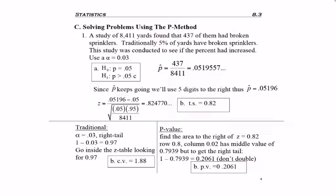The formula requires you to start with p-hat, the sample proportion. So I had to find p-hat by taking the number of yards with broken sprinklers divided by the number of total yards, and I got a decimal value that kept going. So remember, I need to use at least five digits past the decimal to prevent round-off error.